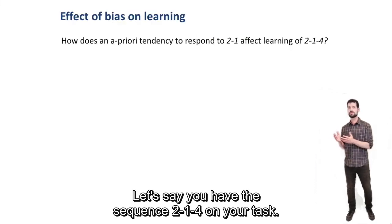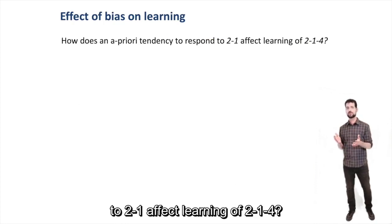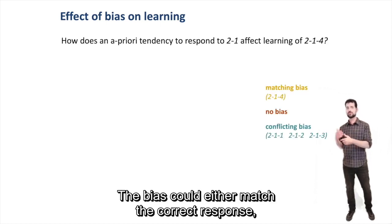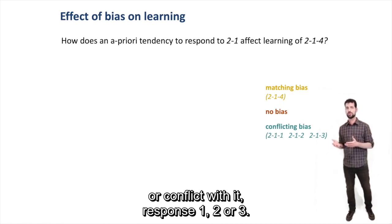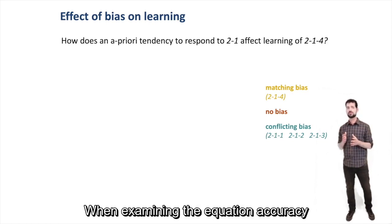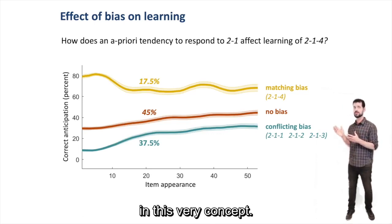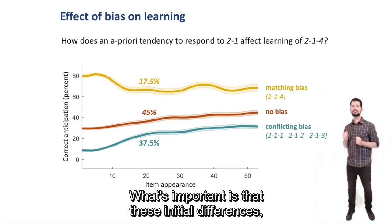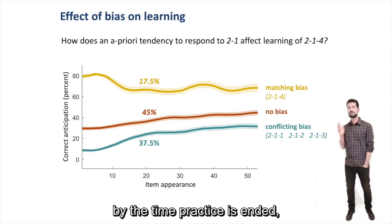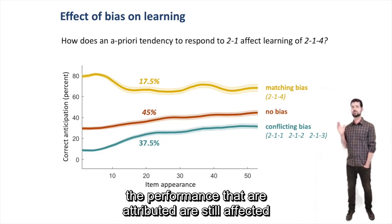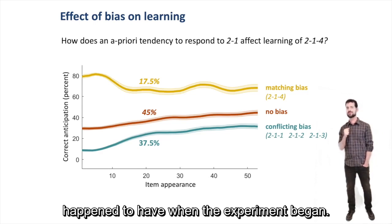How did these biases affect performance? Let's say you have the sequence 2-1-4 in your test. How does an a priori tendency to respond to 2-1 affect learning of 2-1-4? A bias could either match the correct response, so the response of 4 in this case, or could conflict with it by responding 1, 2, or 3. When examining anticipation accuracy according to this distinction, it's clear that there would be differences in experiment onset, but what's important is that these initial differences, although they diminish, are still there in block 6. By the time practice has ended, the performance towards the triplets is still affected by the initial bias the participant happened to have when the experiment began.